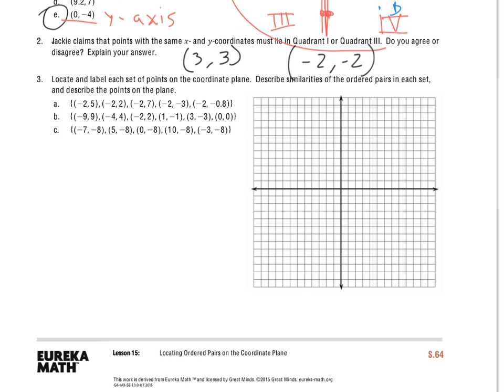For number 3, I'll do part A for you and explain a little bit about this. Locate and label each set of points on the coordinate plane. Describe the similarities of the ordered pairs in each set and describe the points on the plane. So I'm going to go through and plot all of these on A. So I see I have negative 2, 5.